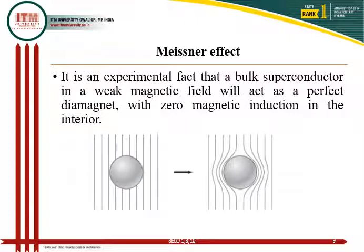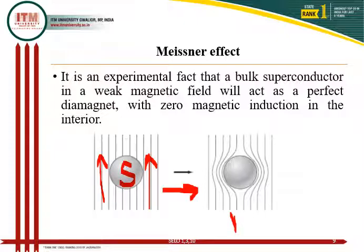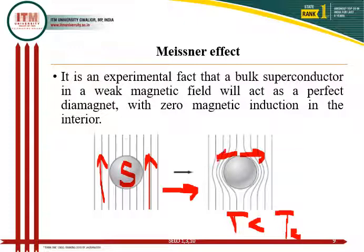It is an experimental fact that a perfect bulk superconductor in a magnetic field will act as a perfect diamagnetic material, with zero magnetic induction in the interior. As shown in the figure, when we keep the material in the magnetic field, all the field lines pass through it. But when you reduce the temperature below Tc, then something interesting happens — the magnetic field lines are ejected out and will not pass through the material. You can see the curvature; everything is ejected out.